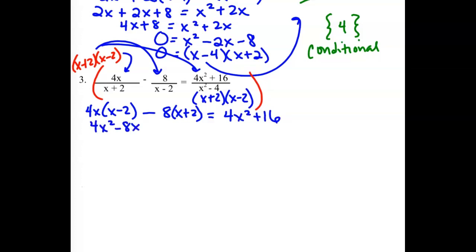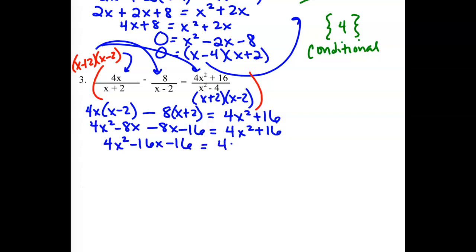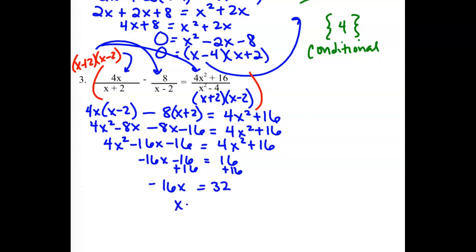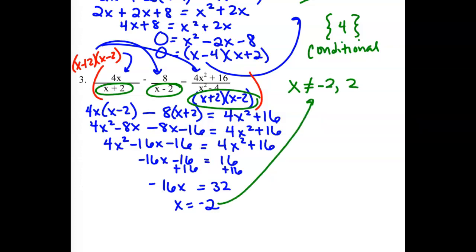Distributing, we get 4x squared minus 8x, minus 8x minus 16. Combining like terms, we have 4x squared minus 16x minus 16 equaling 4x squared plus 16. The x squared terms drop out since we have 4 of them on both sides. We end up with negative 16x minus 16 equaling 16. Adding 16 over gives us negative 16x equals 32, so x would be negative 2. But our excluded values say x can't be negative 2 or positive 2, so our only solution is extraneous — there is no solution. We call this inconsistent.